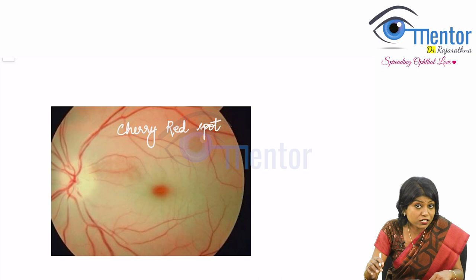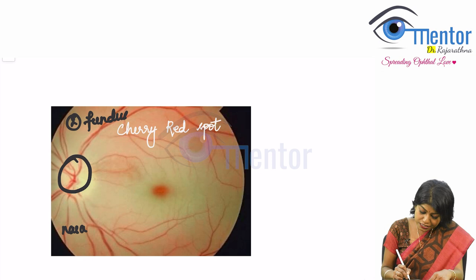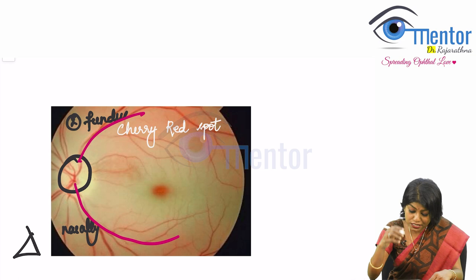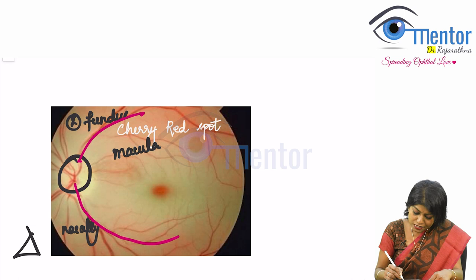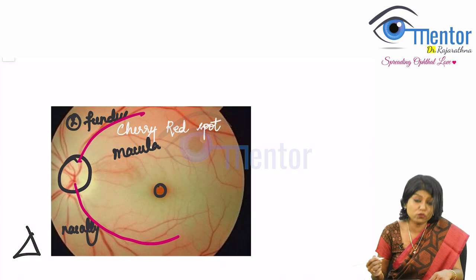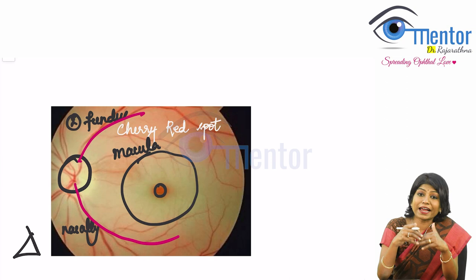First, let's look at how the fundus actually appears with a cherry red spot. This is the left fundus — the optic disc is located nasally. The temporal branches of the central retinal artery enclose the macula, and the center of the macula is the fovea, with the foveola at its center. A cherry red spot appears right at the foveola, surrounded by pale retinal edema.